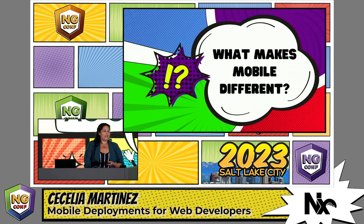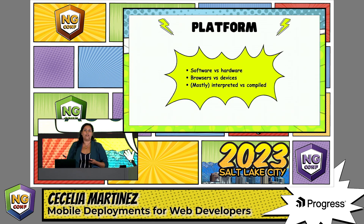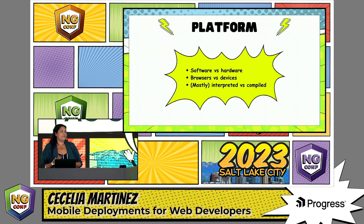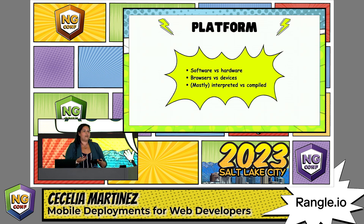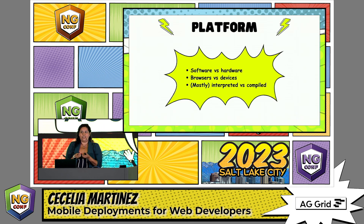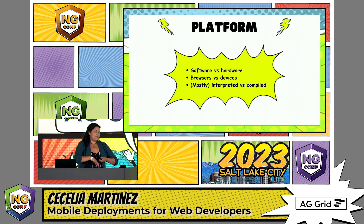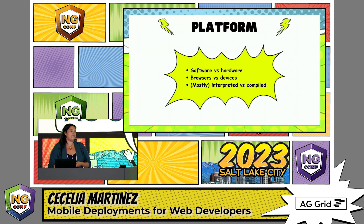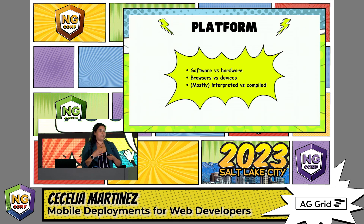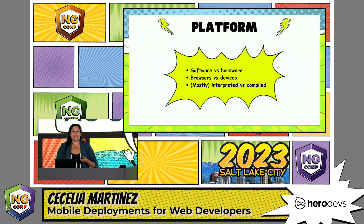The reason mobile is so different from web is ultimately because of the platform you're building for. When you're building for web, you're essentially building an app that interacts with a browser — two pieces of software interacting. When you're building for mobile, you're building for hardware. You're actually compiling a native application, an executable binary that's going to be installed on a piece of hardware. When developing cross-platform, you're doing that for both iOS and Android, so you need to consider the complexities and intricacies of each individual platform. With web, you're working with mostly interpreted code, more dynamic, interacting with the browser at runtime versus a compiled binary executed at a later time.